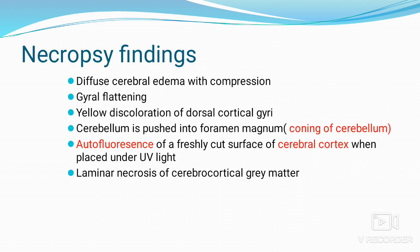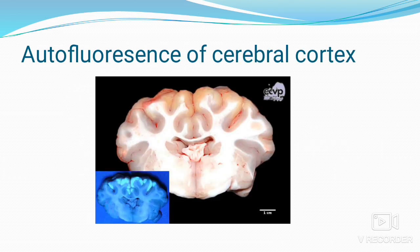Necropsy findings include diffuse cerebral edema with compression, gyral flattening, yellow discoloration of dorsal cortical gyri, and coning of the cerebrum — the cerebrum is pushed into the foramen magnum. Autofluorescence of a freshly cut surface of cerebral cortex is seen when placed under UV light. Laminar necrosis of cerebral cortical gray matter is also observed. The autofluorescence of cerebral cortex under UV light can be appreciated in the accompanying picture.